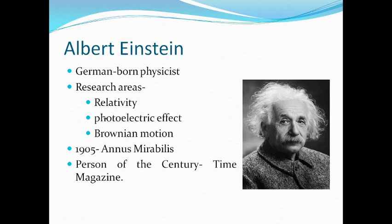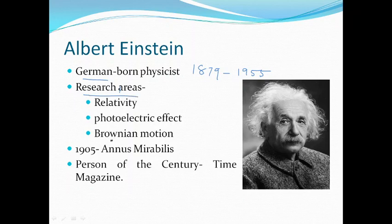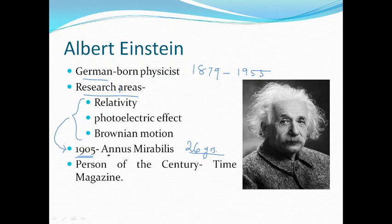Albert Einstein is a German-born physicist, born in the year 1879, and he lived up to 1955. He later migrated to the USA and lived the first part of his life there. He was born in Germany and his main research areas were relativity, photoelectric effect, and Brownian motion. Almost all the important innovations relating to these three areas were made in the year 1905 by Albert Einstein when he was just 26 years of age, and that year is often called Annus Mirabilis, or the year of miracles.